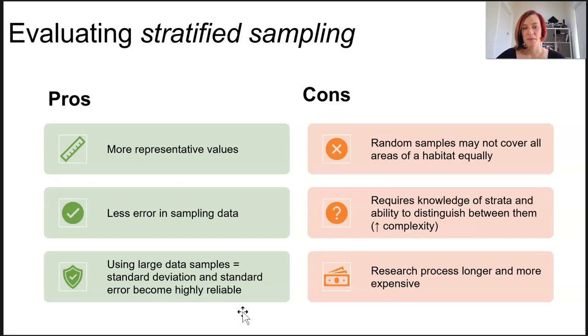However, random samples might not cover all areas of the habitat equally. Even if within your strata, if you're doing the random sampling method, it might not still capture everything that you need. It does require knowledge of strata and the ability to distinguish between them. If you walk into a forest and you cannot tell where the understory is versus the canopy, that's going to really challenge your data collection.